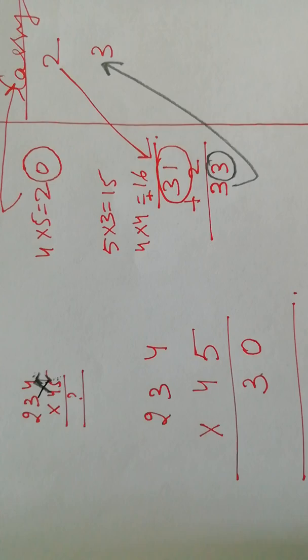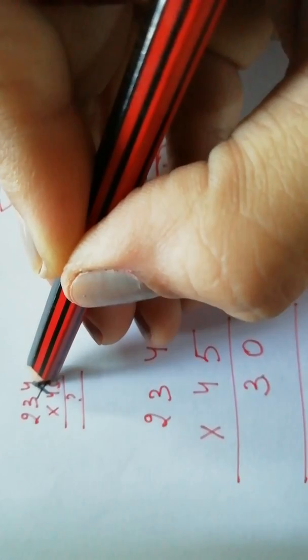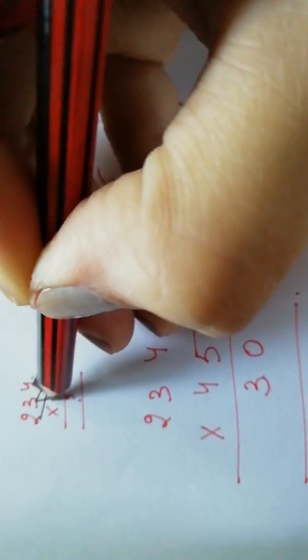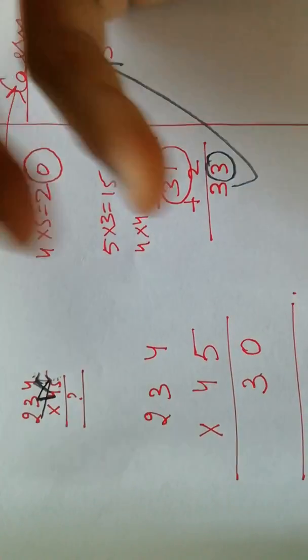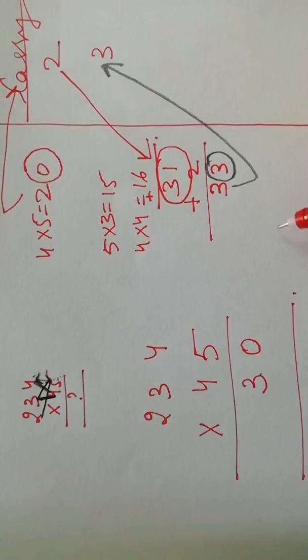Now we've done the multiplication of 5 and 3 and 4 and 4. Now we'll multiply 5 with 2 and 3 and 4, and again we'll add as we did in the previous step. So what are we going to get?